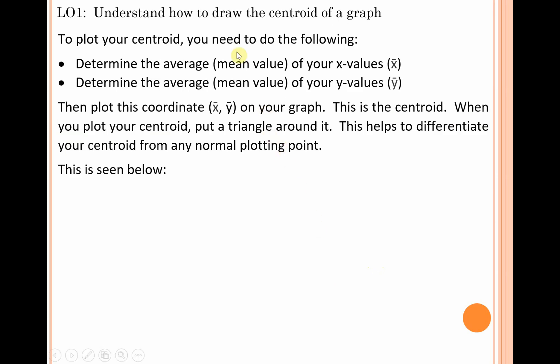To plot the centroid of your graph, you need to determine the average or mean value of your x-values (x̄), and similarly you need to get the average value of all your y-values (ȳ). You then plot this coordinate (x̄, ȳ) on your graph, and this is your centroid. When you plot that centroid, please put a triangle around it.